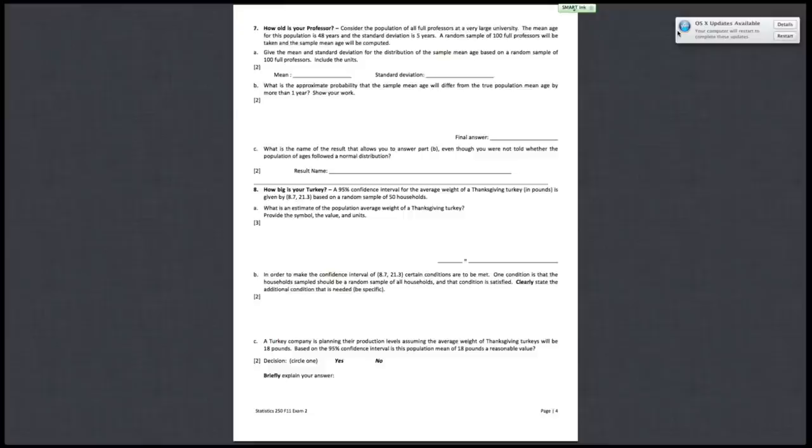All right, so number seven, how old is your professor? Part A asks: give the mean and standard deviation for the distribution of the sample mean age based on a random sample of 100 full professors. Include the units. So the first thing I'd like to do is circle all the numbers of interest that the problem gives you. That'll be 48 years, that's the mean age for the population. Standard deviation is five years. And the random sample is 100, so n equals 100.